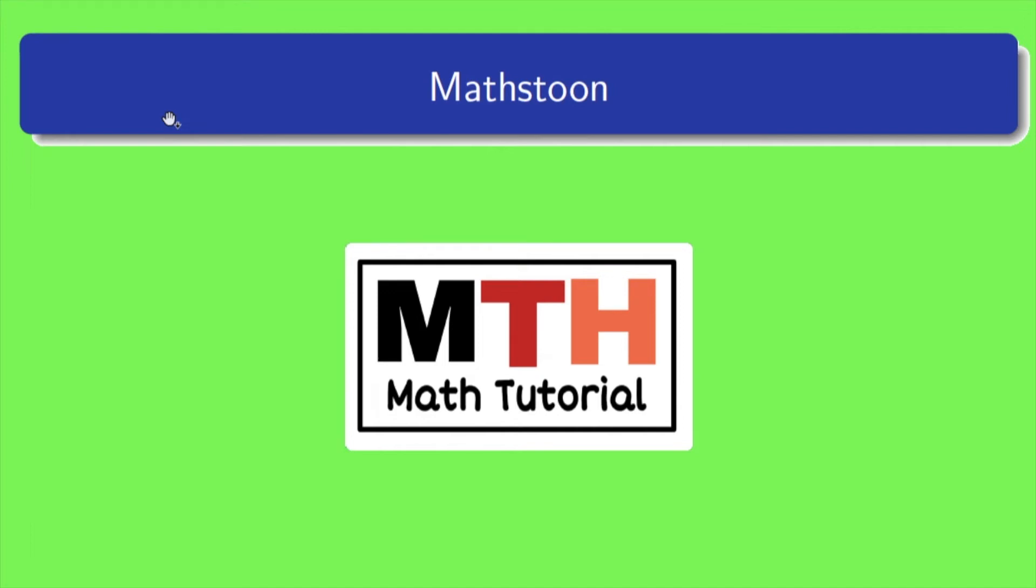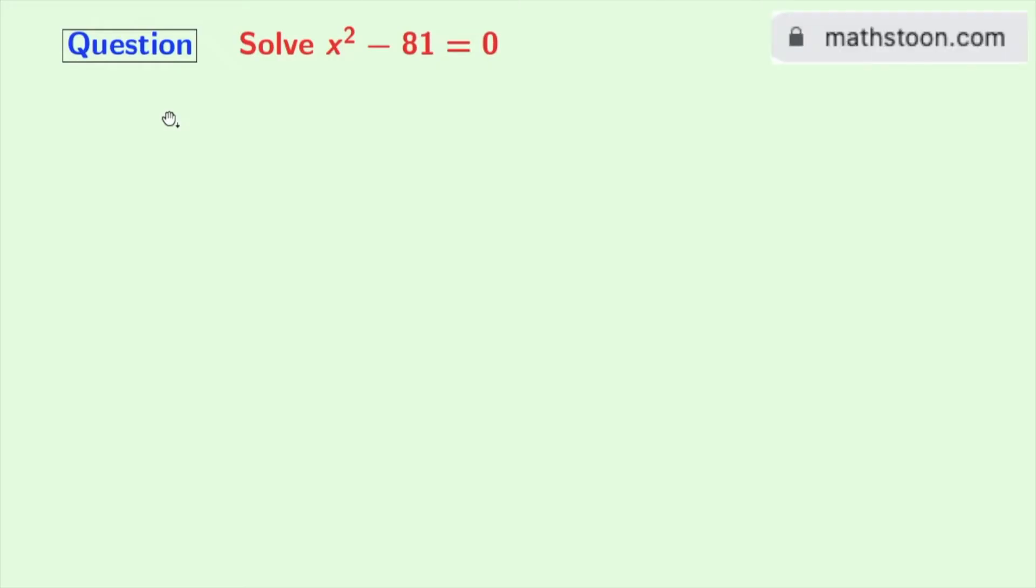Hi friends, welcome to MathStone. In this video, we will learn to solve the quadratic equation x square minus 81 equals 0. For more like this, please visit mathstone.com or check the link in the description box. Now let's do it.